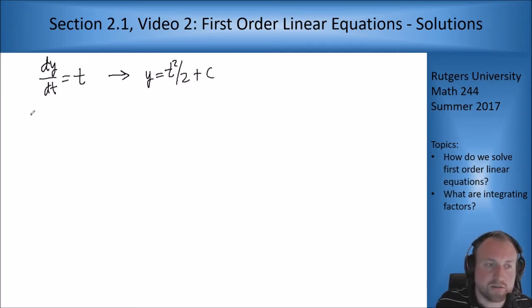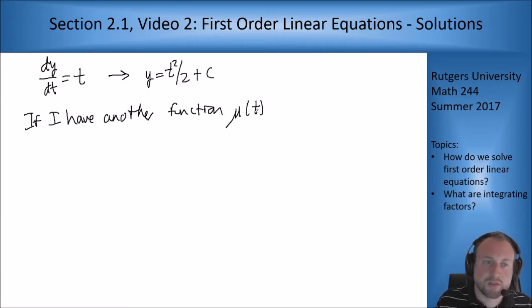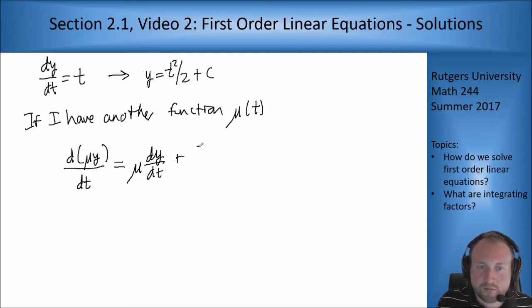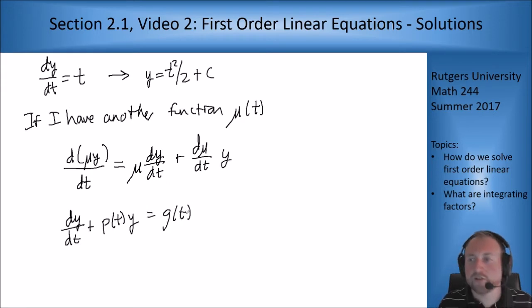So if I have another function, say a mu of t, let's look at what happens if I take the derivative of mu times y. Well, this is just the product rule. If I do the product rule on this, I get mu times dy/dt plus d mu/dt times y. But this looks decent. What do our general first-order equations look like? Our general equation looks like dy/dt plus p of t y equals g of t. That's our general first-order linear equation that we've been talking about in the last video.